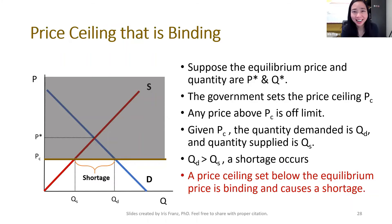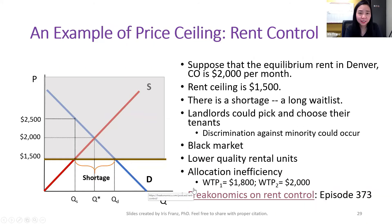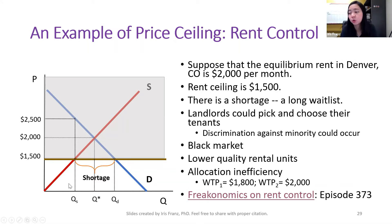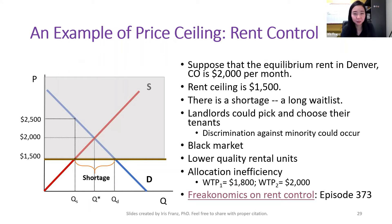Now let's look at an example. Suppose there is a rent control mandate in the city of Denver, Colorado. Suppose our equilibrium rent is $2,000 and the government comes in and sets the maximum rent at $1,500. Quantity supplied is here, quantity demanded is there, so quantity demanded is higher than quantity supplied and therefore we have a shortage. When you want to rent a unit and the agent says sorry, we don't have a unit right now but we'll put you on the waitlist — that means there is a shortage, and you have to wait in line.